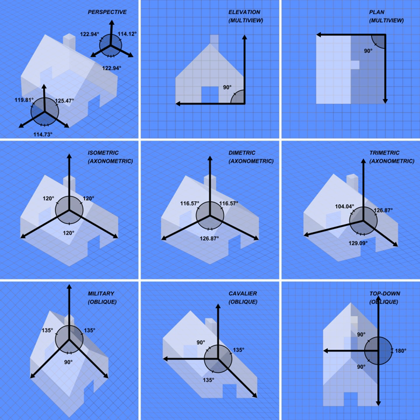Visible lines are continuous lines used to depict edges directly visible from a particular angle. Hidden lines are short dashed lines that may be used to represent edges that are not directly visible.